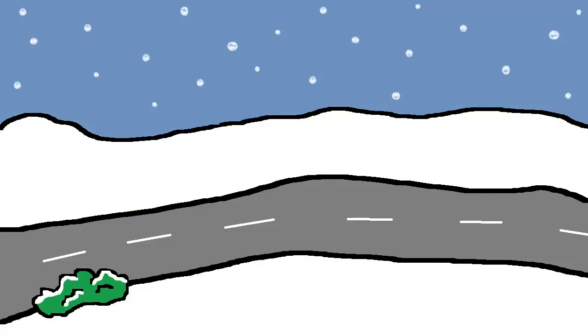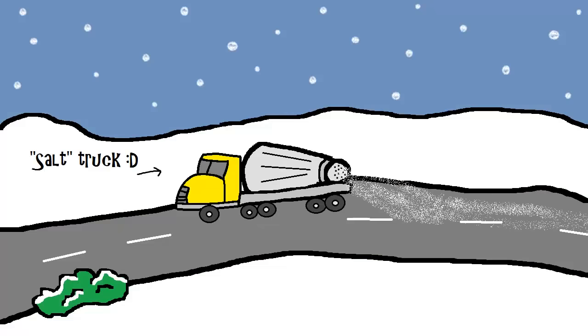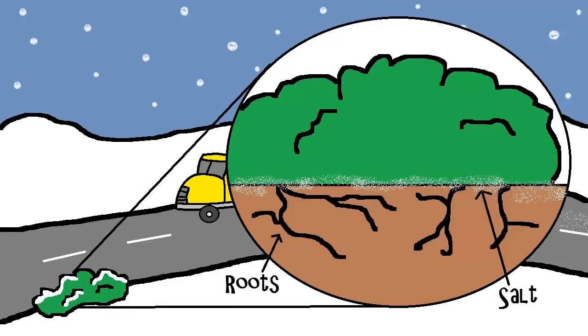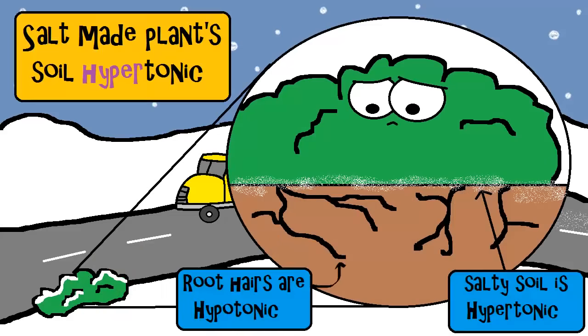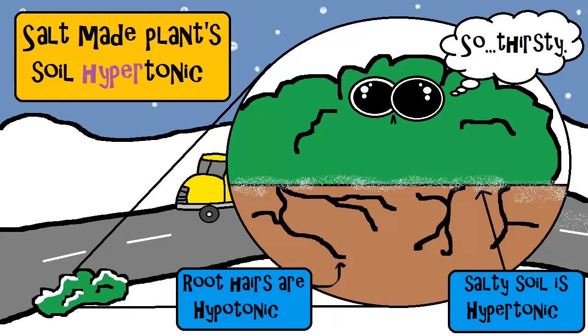Or if you live in an area that gets ice, you might be used to salt trucks salting the road. Great for icy roads. Not so great for the plants that live right by the roadside. If you dump a bunch of salt on these plants, you can make the soil environment around them very salty, very high in solute concentration, very hypertonic compared to the root hair cells.